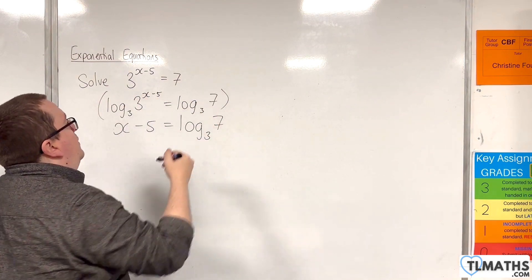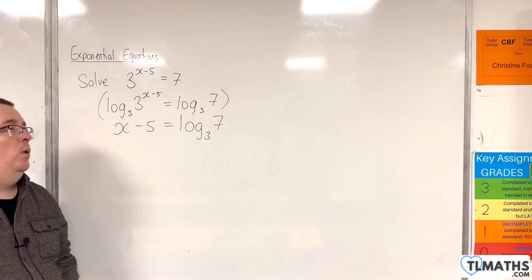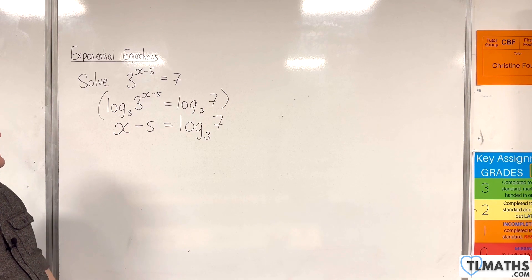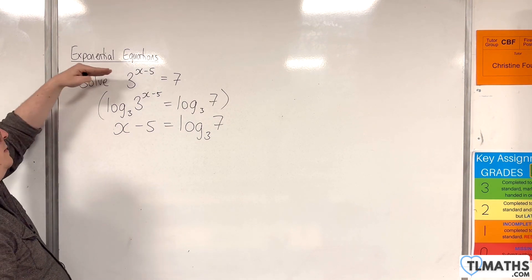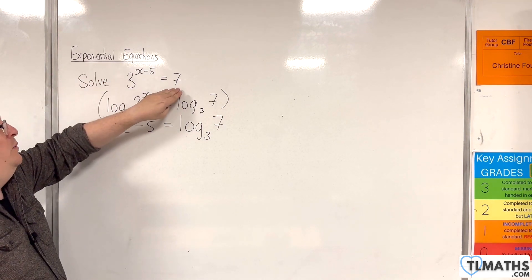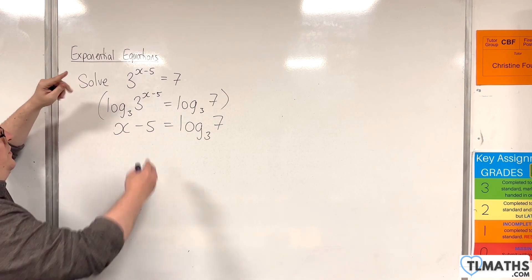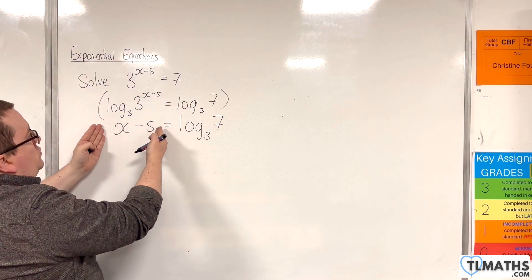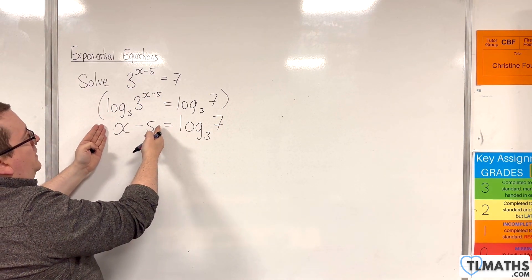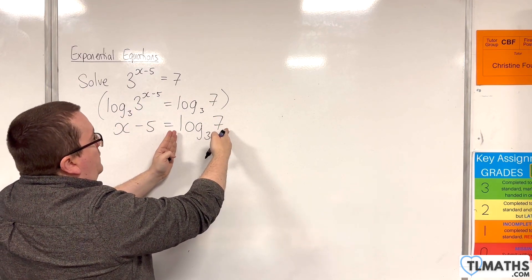This is that intermediate step of working that I'm not going to bother writing down because I'm logging both sides with base 3. The left hand side will reduce to x minus 5 and the right hand side is log base 3 of 7.